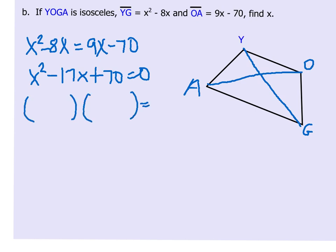Now I'm going to factor that. What two numbers multiply to 70 that add to negative 17? Hopefully, X minus 10 and X minus 7 come to mind. Then I'm going to solve, so I get X equals 10 and X equals 7.